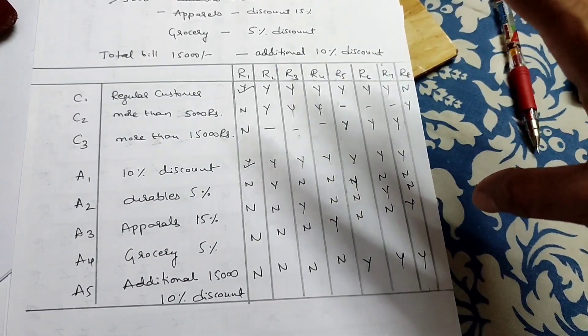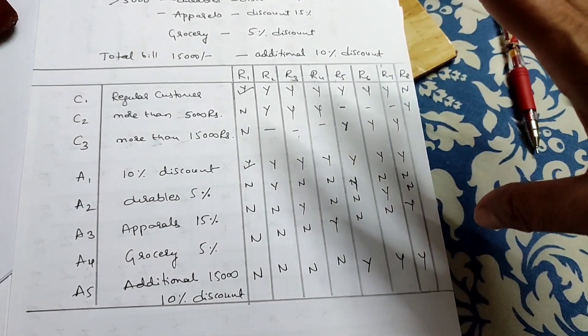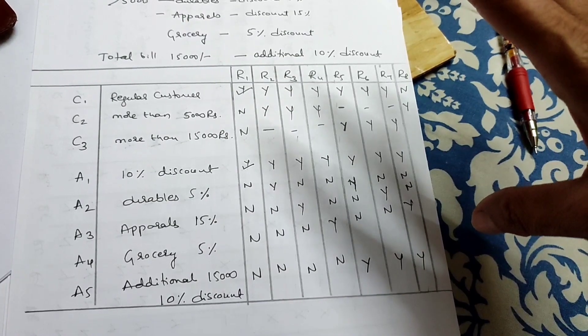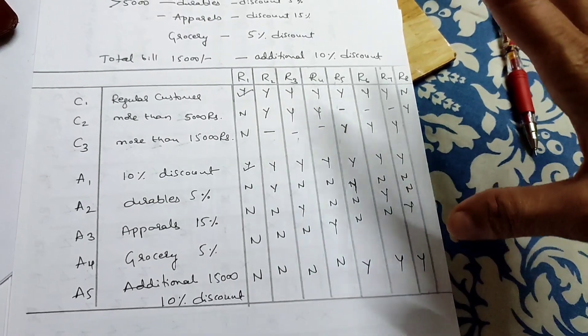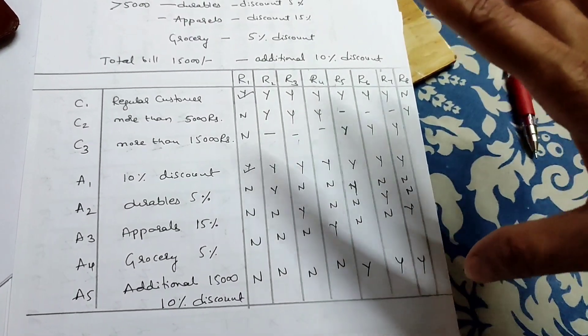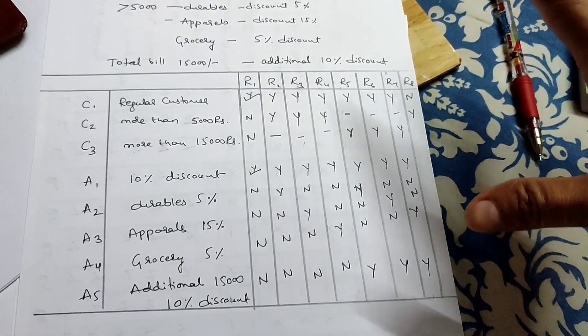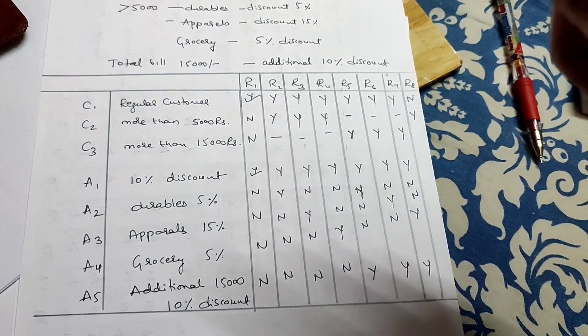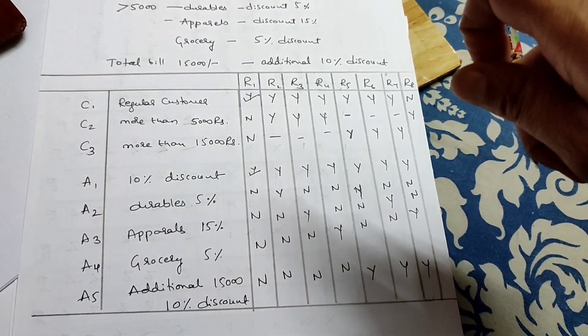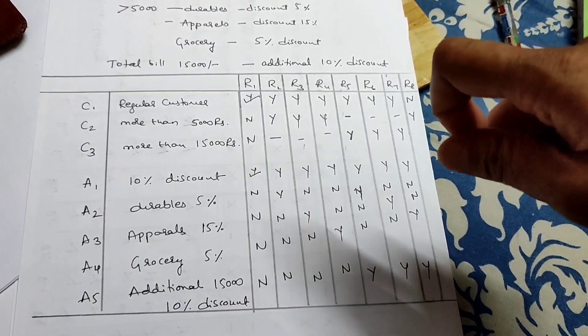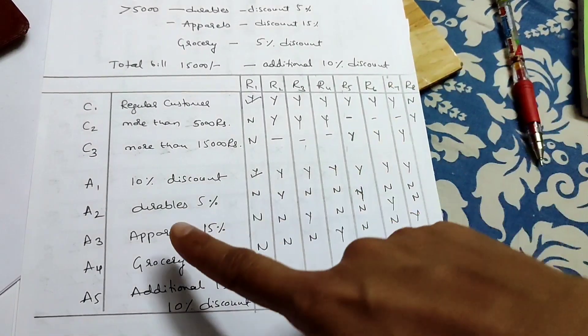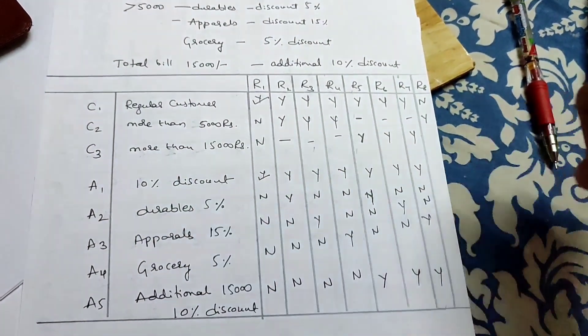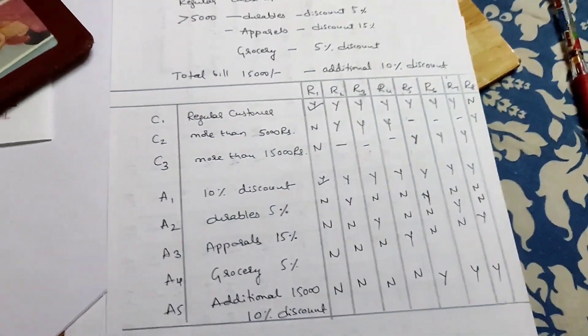For the first rule: more than 500 rupees — no. More than 5,000 rupees — no. More than 15,000 — no. So the regular customer condition is met but the purchase does not exceed 5,000 or 15,000. In this case, the action is: apply the 10% discount for being a regular customer.